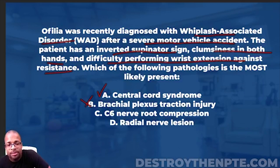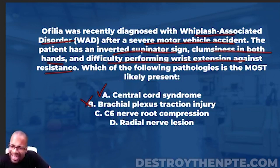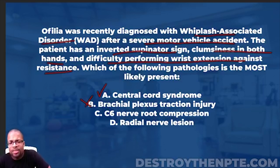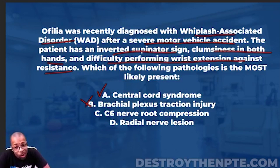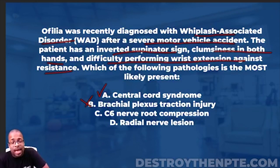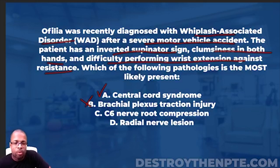C6 nerve root compression is essentially a radiculopathy. The problem: radiculopathy is typically unilateral and does not produce upper motor neuron signs. You might expect difficulty performing wrist extension — that fits — but you would not see an inverted supinator sign with a C6 nerve root compression. You also wouldn't see bilateral hand clumsiness. Big X on that one too.